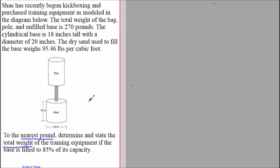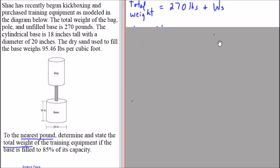To answer this question, we need to find the total weight by considering the total weight of the bag, pole, and unfilled base which is 270 pounds, and we're going to add the weight of the sand that's being added to the base.